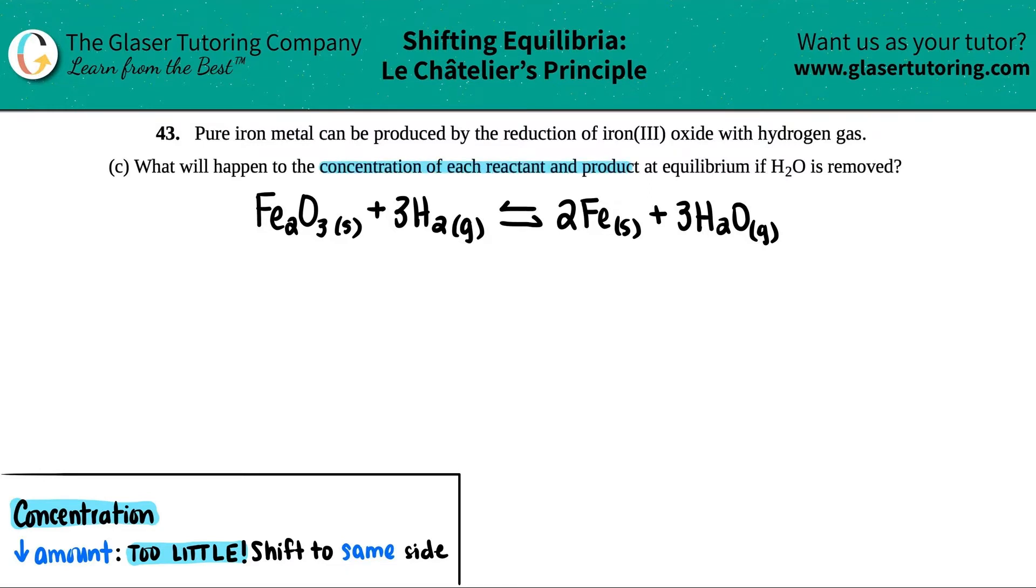Le Chatelier's Principle: we were at equilibrium, then we did something that shocked the system, so we have to go back to equilibrium. It's basically a set of rules in which you have to figure out how do we get back to equilibrium.